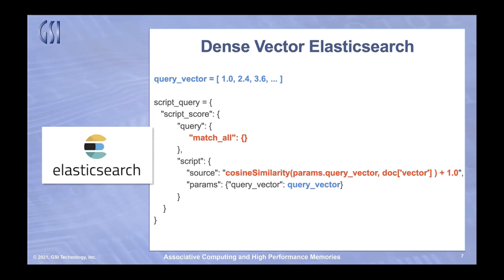Elasticsearch performs the distance computation between the query vector and all the other vectors in the database, using this cosine similarity function. The cosine function, often used for computing pairwise distance or similarity between vectors, has a range of minus one to one. We need to add one to it because Elasticsearch only scores on positive numbers — that's why you see that offset. The result of this query uses cosine similarity as the score, then re-ranks based on that score. Typically you only care about a few of the items in the result — the closest matches — that's the K in KNN or top K.